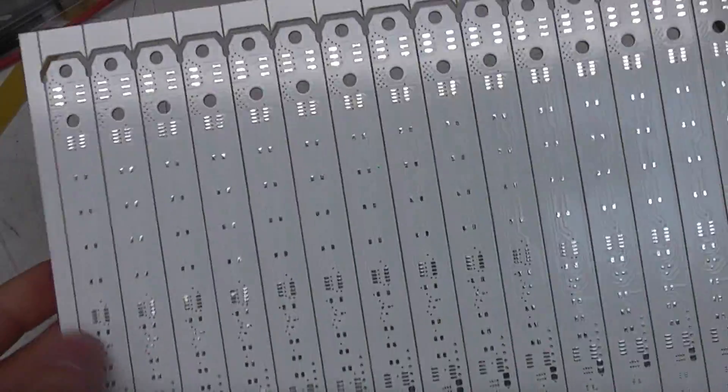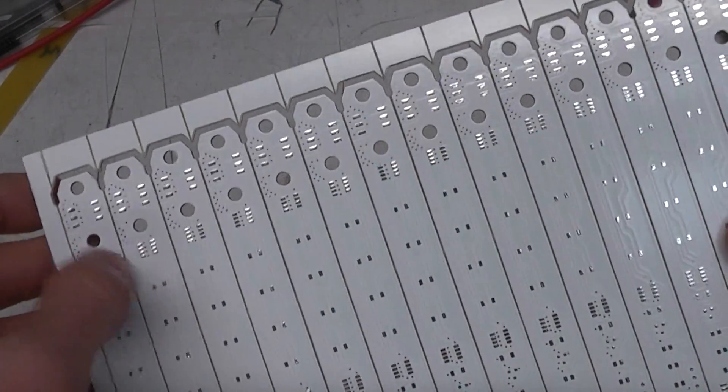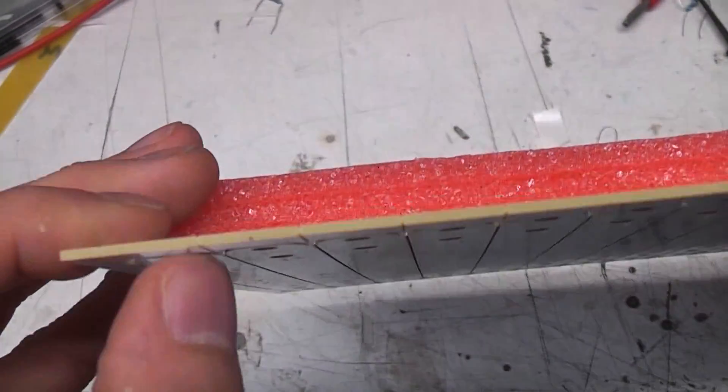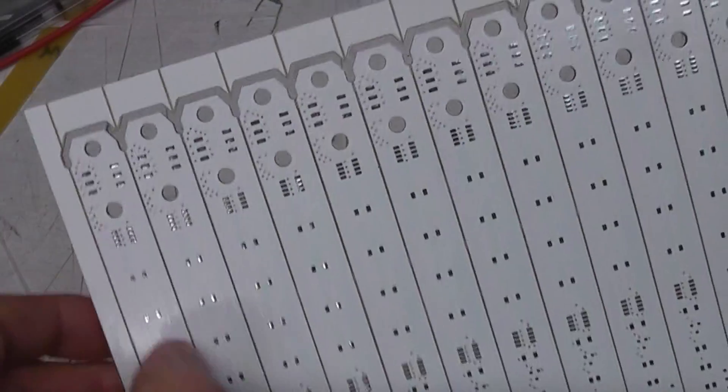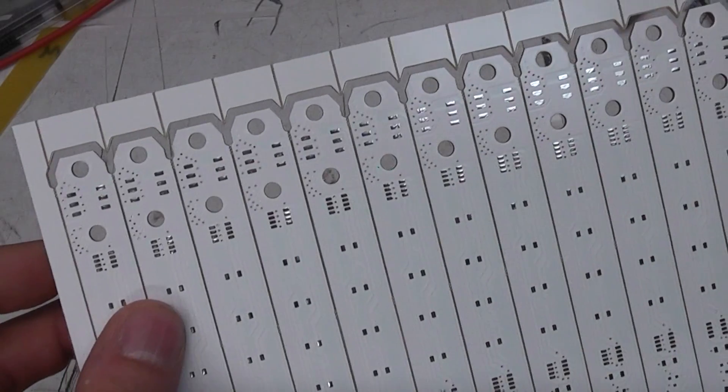Right, so I've got this panel of PCBs. These are intelligent LED strips and I wanted to use V-scores for separating them just to avoid lots of routing, which would have probably cost more, but also to get a nice efficient panel utilization.